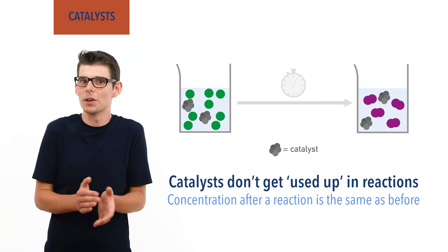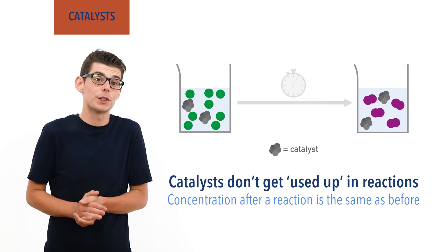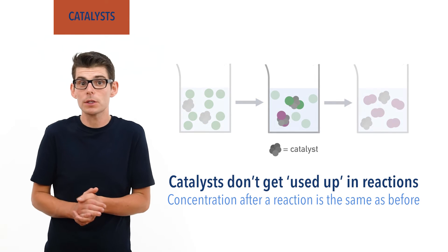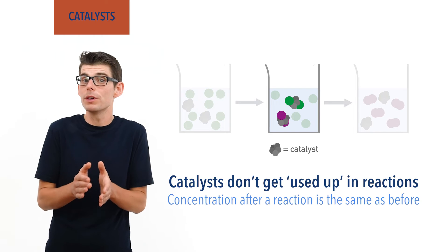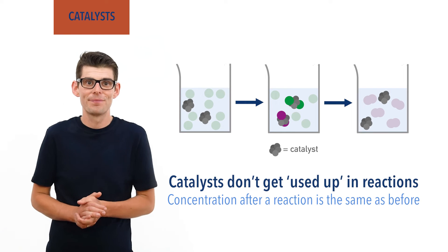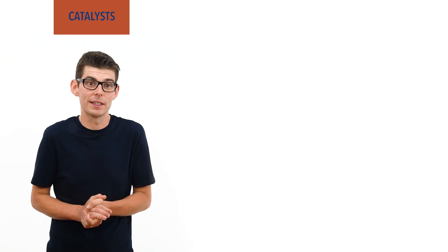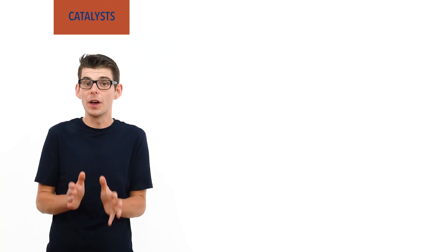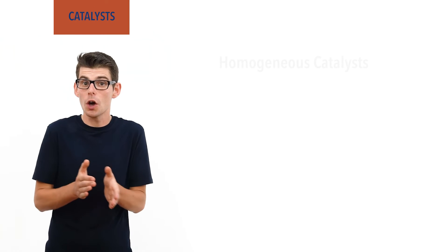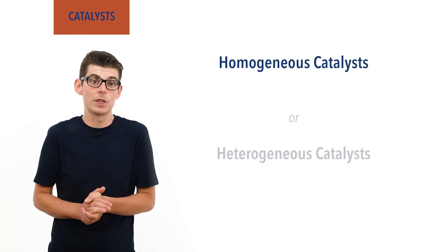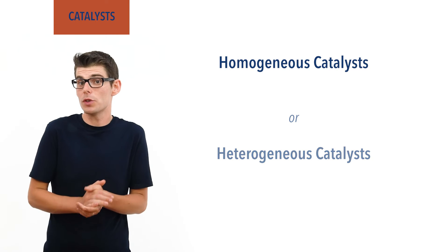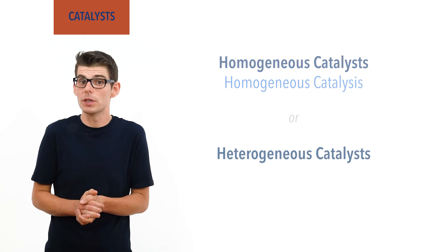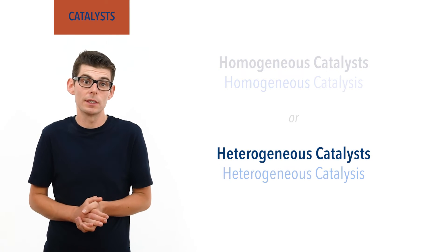This isn't to say catalysts can't react — some definitely do, and catalysts often change during a reaction by reacting with reactant particles. However, they will always reform before the end of the reaction. There are huge numbers of catalysts and a mind-bending number of different ways they can work in reactions. However, we tend to describe catalysts as either homogeneous or heterogeneous. Reactions that use homogeneous catalysts are examples of homogeneous catalysis, and reactions that use heterogeneous catalysts are examples of heterogeneous catalysis.